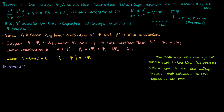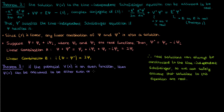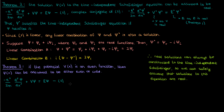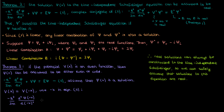The third theorem states that if the potential V(x) is an even function, then small ψ(x) can be assumed to be either even or odd. Starting with equation 2, the time-independent Schrödinger equation, we suppose that small ψ(x) is a solution. If V(x) is an even function, then by definition V(x) and V(−x) are equal. We now replace all functions of x in equation 2 with functions of −x.